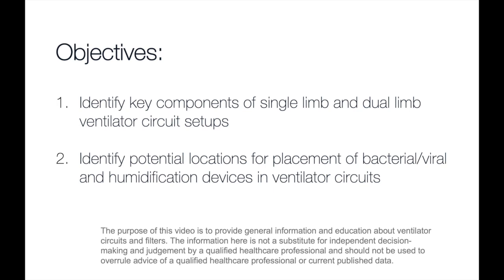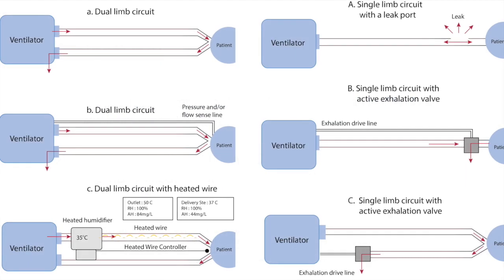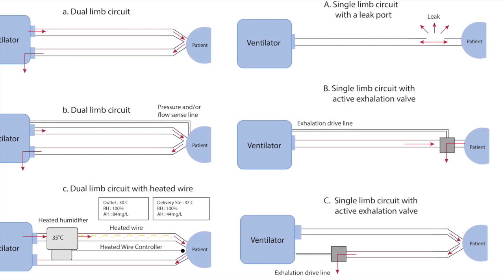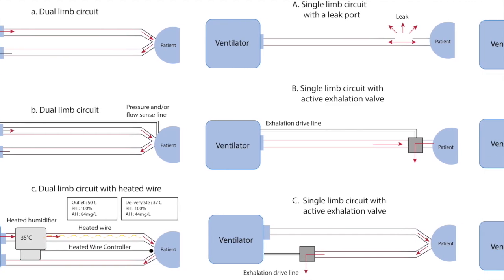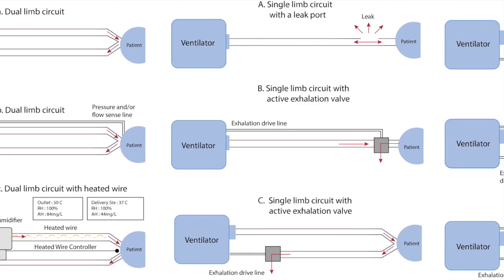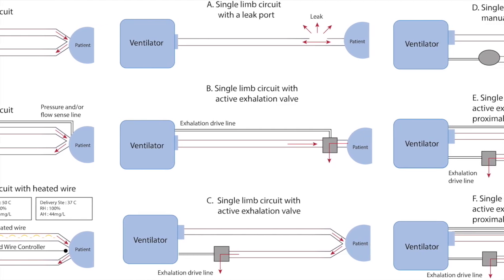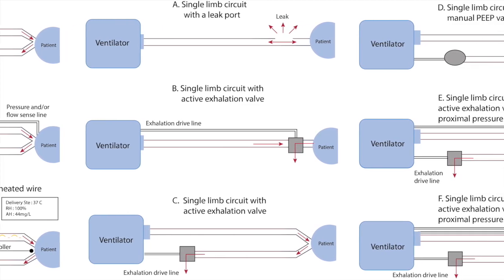This module is designed to help you identify key components of single limb and dual limb ventilator circuit setups, as well as identify potential locations for the placement of bacterial viral filters and humidification devices in different ventilator circuit setups. There are many different types of ventilator circuit and not all can be used interchangeably. The two basic categories for vent circuit types are dual limb and single limb circuits, but there are multiple configurations of each.